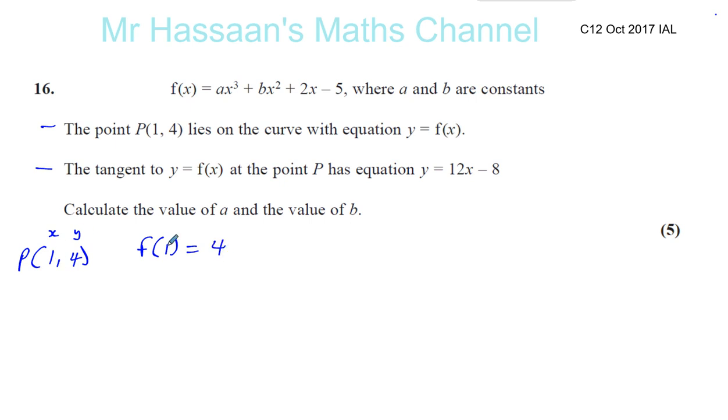If I input 1 into the function, the output should be 4. So let's do that. Let's input 1 into the equation. We have a times 1³ plus b times 1² plus 2 times 1 minus 5, and that's going to give us 4. So that will give us one of the equations that we need that might help us.